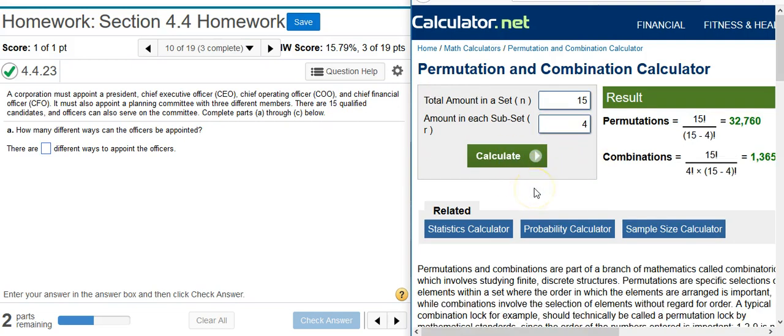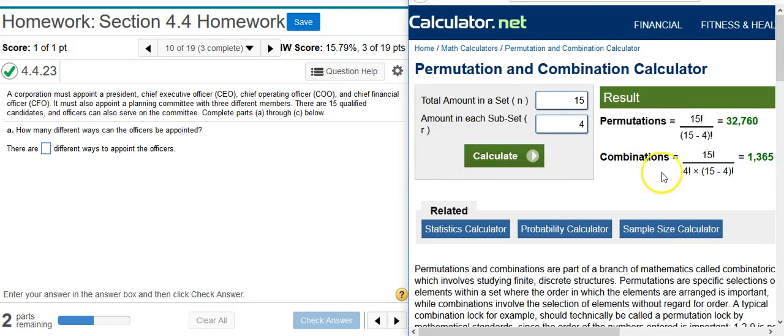And here are my values, but do I take the permutation or do I take the combination? Well, the key question we need to ask ourselves is, do we have an order that matters? Is order important in what we're trying to calculate? We're calculating this for the officers that are going to be appointed. The officers have a hierarchy, which is a type of order. Therefore, order is important.